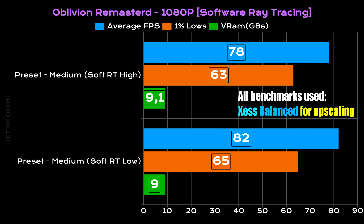Staying at 1080p, I then looked at the software ray tracing results — the only two presets being high and low — paired with the medium graphical preset. For the high software ray tracing preset, we maintained an average FPS of 78, with 1% lows at 63 and VRAM at 9.1 gigs. With the low preset, average FPS came in at 82 and 1% lows at 65. Not a big difference there, same with VRAM, but there were some frame rate benefits going with the lower preset.